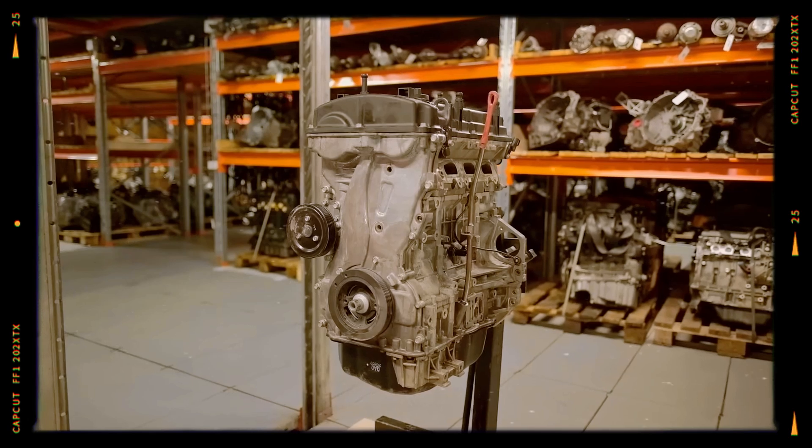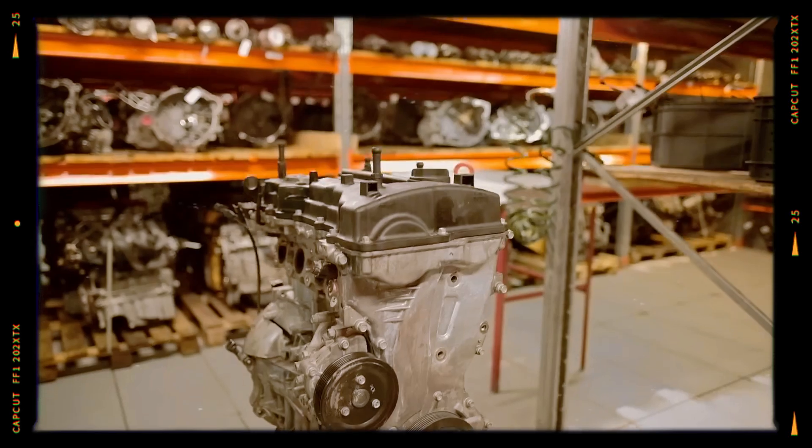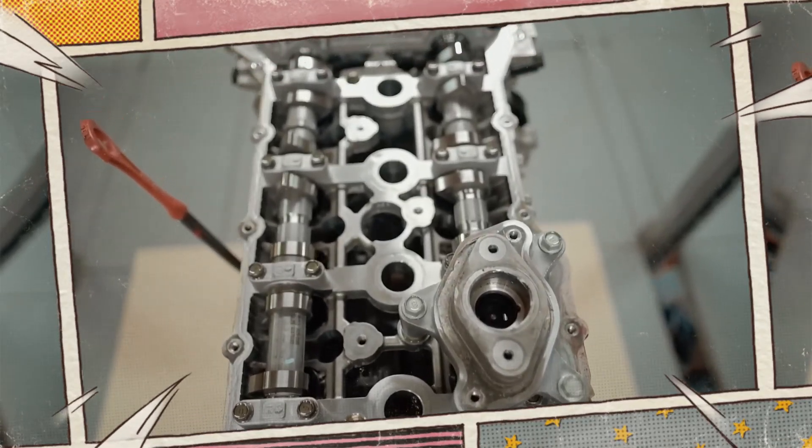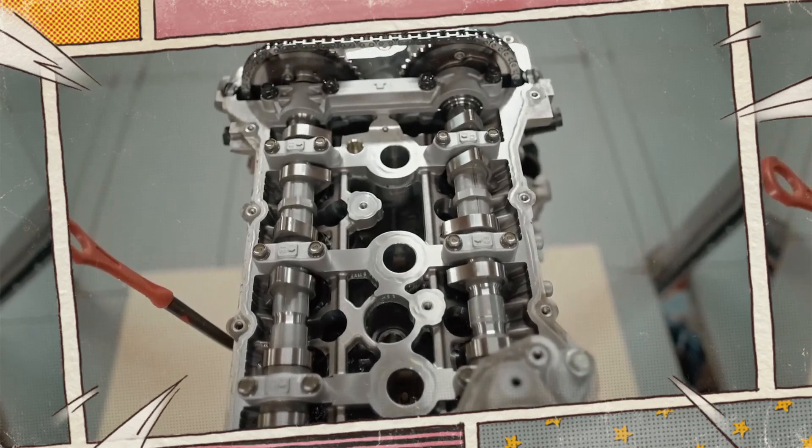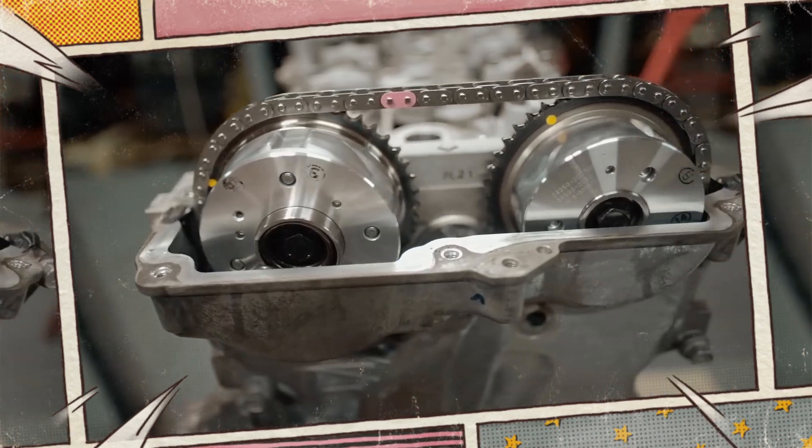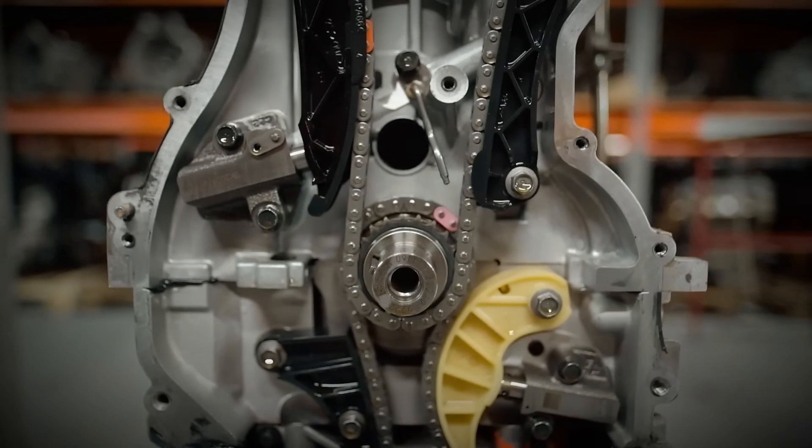The 2.4 Theta 2 GDI offers class leading power for its size and a lightweight all-alloy build, but it demands disciplined maintenance. Keep oil fresh, service the intake every 50,000 miles and address phaser or VIS faults early. And the engine can reward you with years of smooth driving.